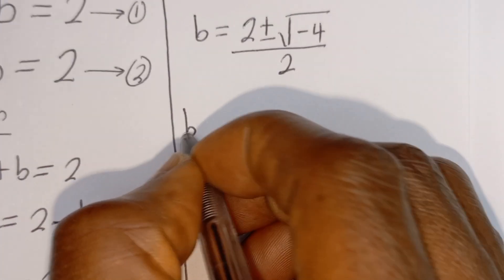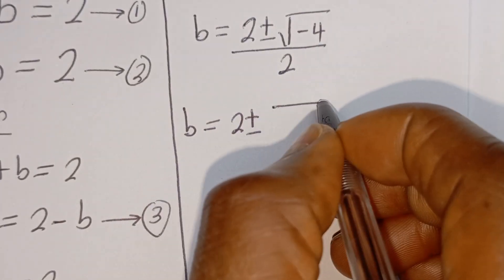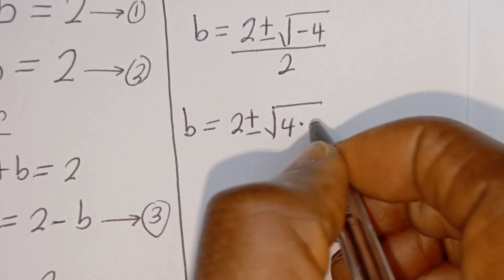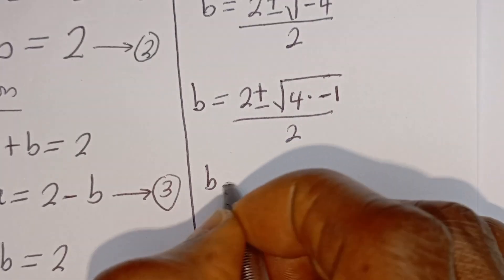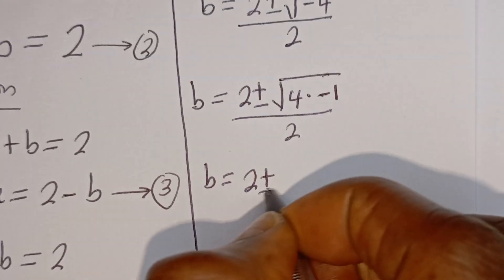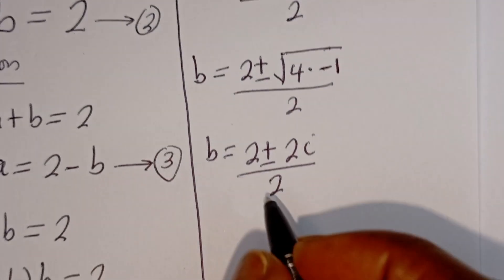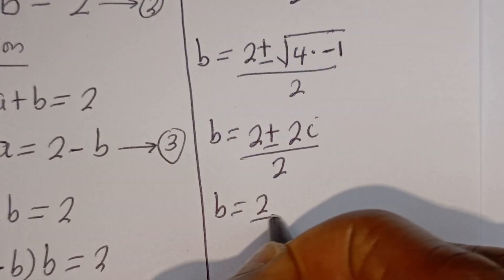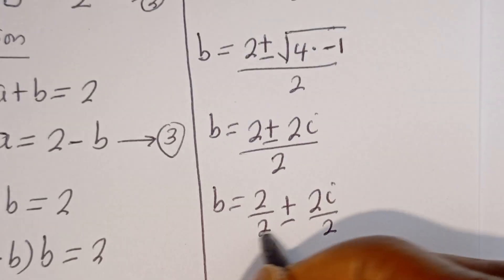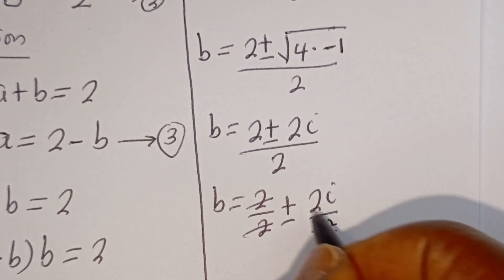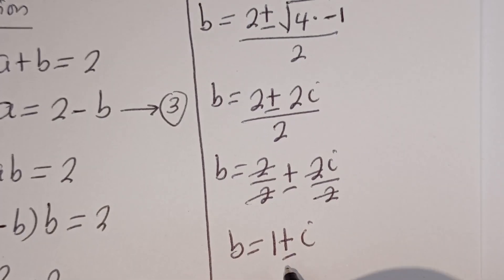Then B is equal to 2 plus or minus the square root of minus 4, divided by 2. The square root of minus 4 is 2i, so B equals 2 plus or minus 2i, divided by 2. Cancelling the 2s, B is equal to 1 plus or minus i.